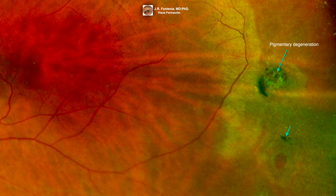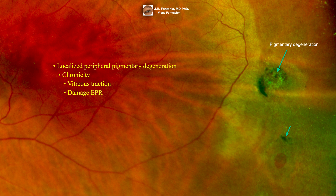Here we can see a localized peripheral pigmentary degeneration. Pigmentary degeneration reflects chronicity. The pigmented appearance indicates the soft and chronic traction of the vitreous at the attachment. The constant vitreous traction ends up causing damage to the retinal pigment epithelium. This lesion can be found associated with different types of peripheral retinal degeneration.